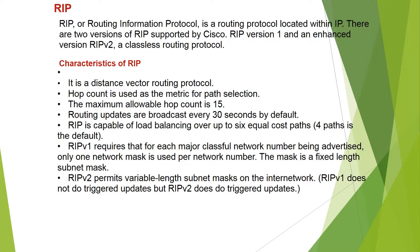RIP, or Routing Information Protocol, is a routing protocol operating within IP. There are two versions of RIP supported by Cisco: RIP version 1 and the enhanced RIP version 2. It is a classic routing protocol.